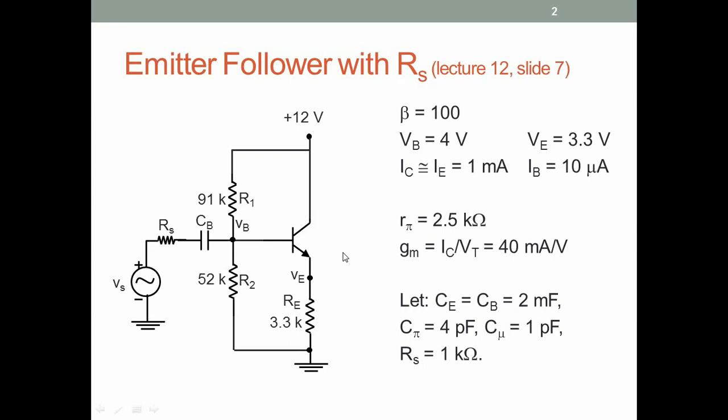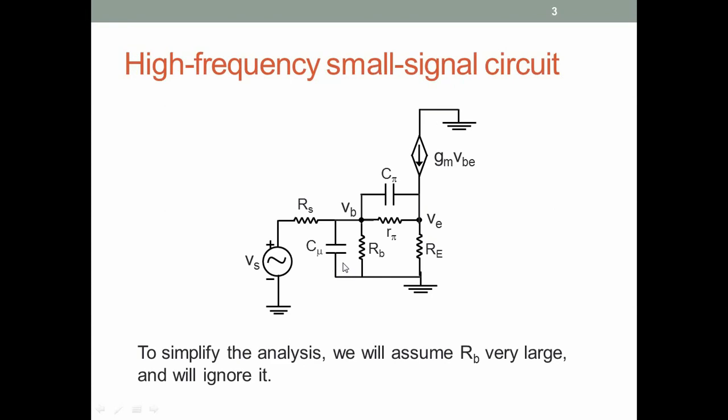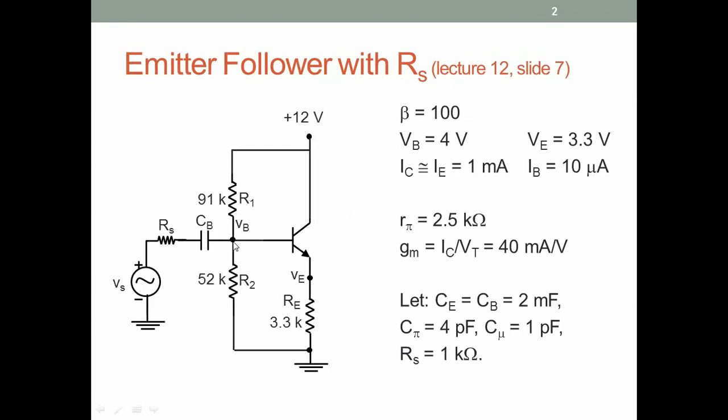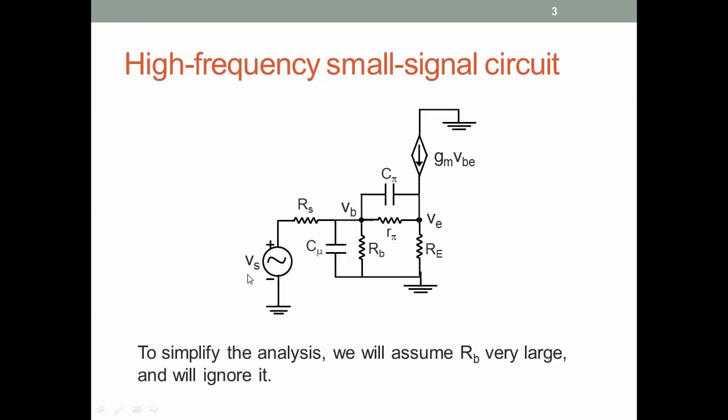We will draw the small signal circuit. CB will be shorted and we will have Cπ and Cμ. Cμ will be from base to collector—collector is ground—so Cμ will be from base to ground, and Cπ will be between base and emitter. Neither of the terminals of Cπ will be ground. Here is the circuit: R1 and R2 will be in parallel with each other, base to ground, so R1 parallel R2 we will call Rb. That goes from base to ground, Cμ from base to ground, Cπ from base to emitter, rπ base to emitter, RE, and gm·vbe.